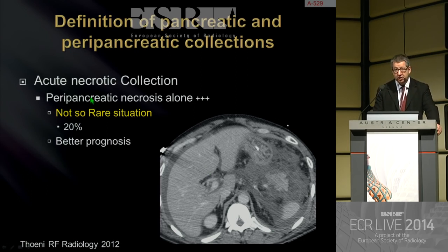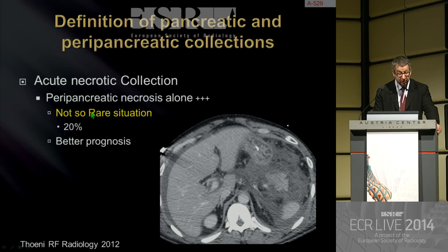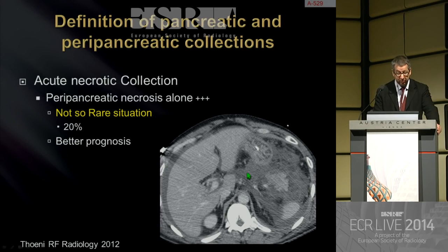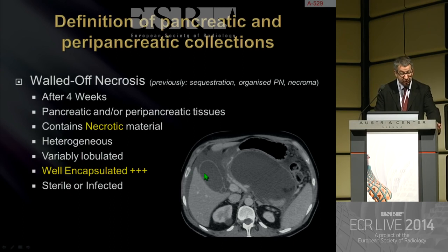A third situation, very important to emphasize because it still creates confusion: you can have acute necrotic collection in necrotizing pancreatitis with only peripancreatic necrosis. It is not so rare — it accounts for around 20% of situations — and it has a better prognosis compared to necrosis present in both the pancreatic parenchyma and peripancreatic area. Here is an example with normal enhancement of the pancreas but a large amount of surrounding fluid.